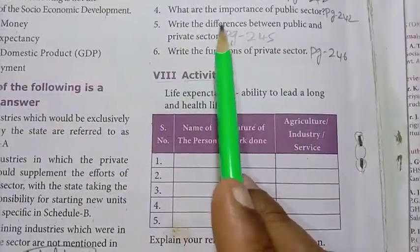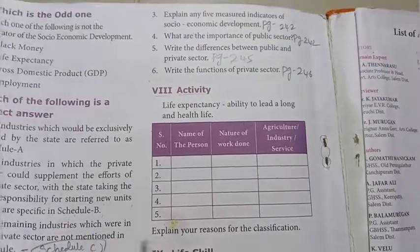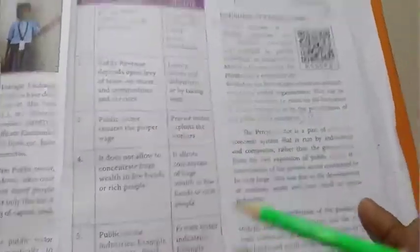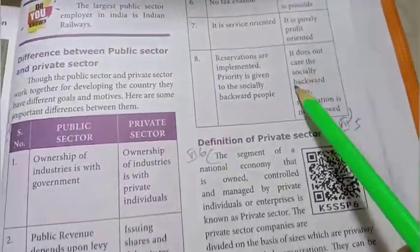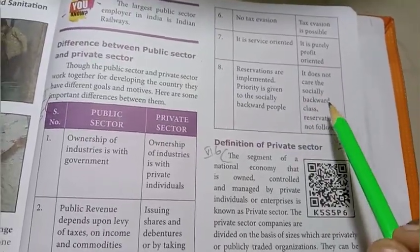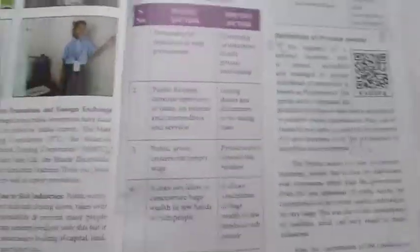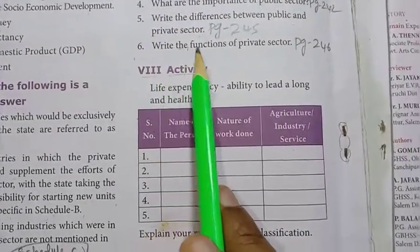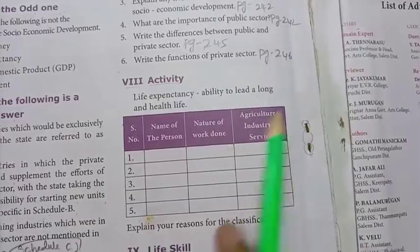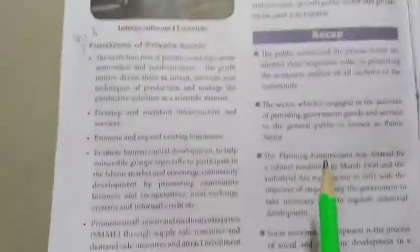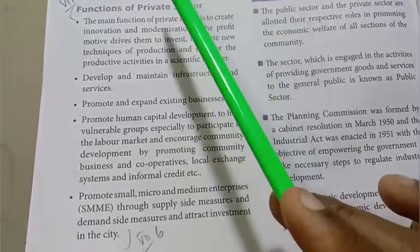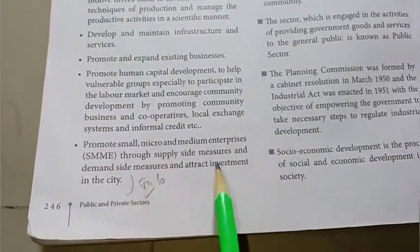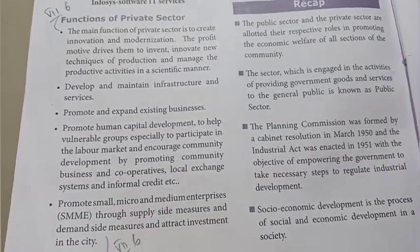Fifth one: write the differences between public and private sector. Refer to page number 245. The difference between public sector and private sector covers 8 points — you may write any 6 points. Sixth one: write the functions of the private sector. Refer to page number 246, under functions of private sector — 5 points. Start from investment in the city.